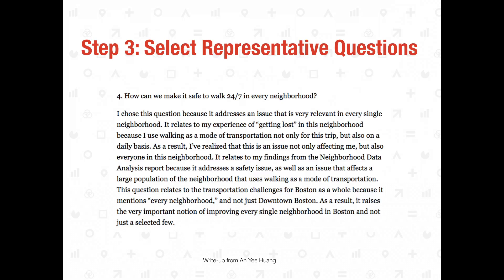Each learner produced a data analysis report that summarized their findings and related them to the background research and interviews they had done. The third step was selecting representative questions for their neighborhood. Each student was charged with selecting five questions that would represent the transportation concerns of their neighborhood, which they would then illustrate as an animated GIF. Students had to really justify these decisions — for example, explaining why pedestrian safety matters to a particular neighborhood because the majority of people there use walking as their mode of transportation.